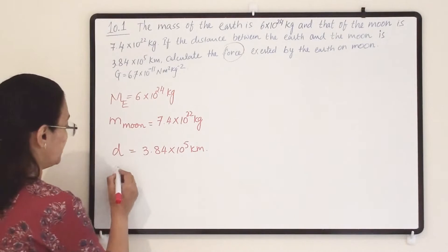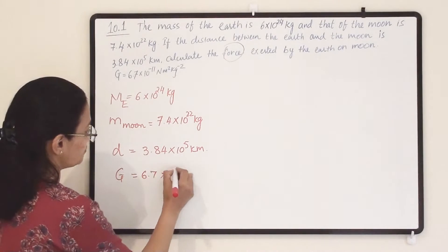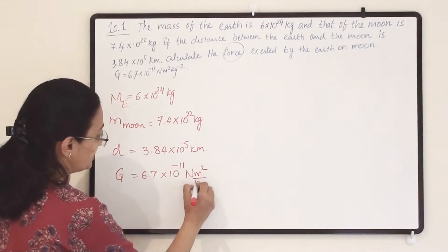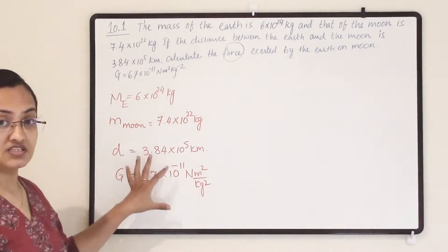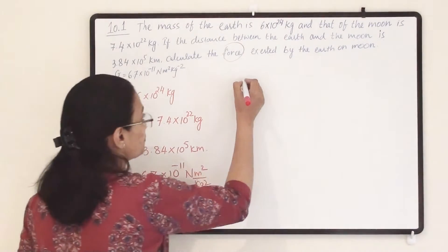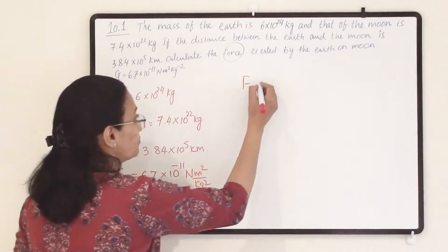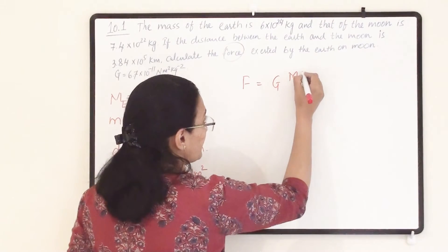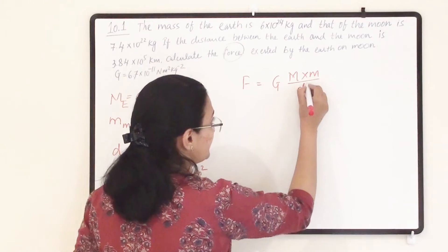They have given the value of G equals 6.7×10⁻¹¹ N·m²/kg². From these quantities, we can find the force exerted from the Earth to the moon using the formula F equals G·M·m divided by d².